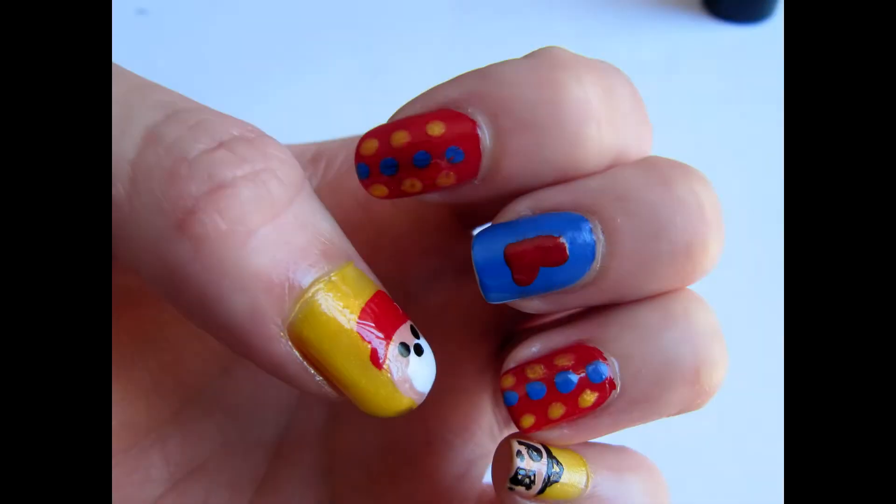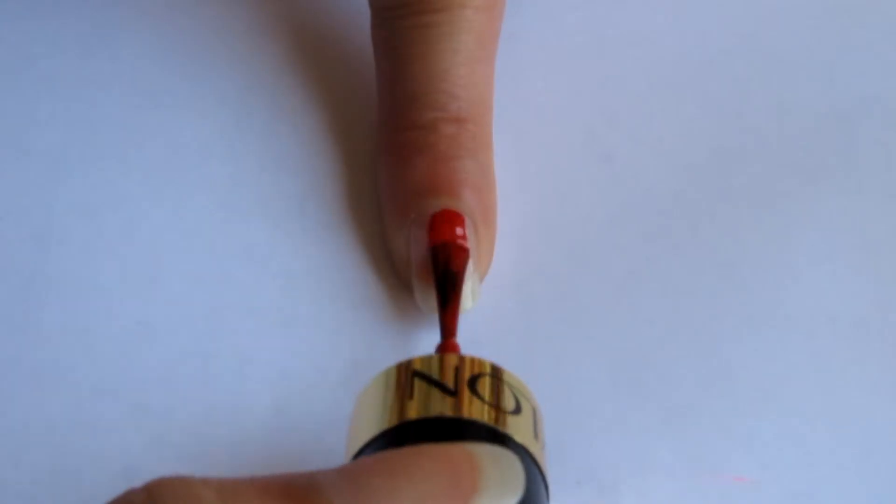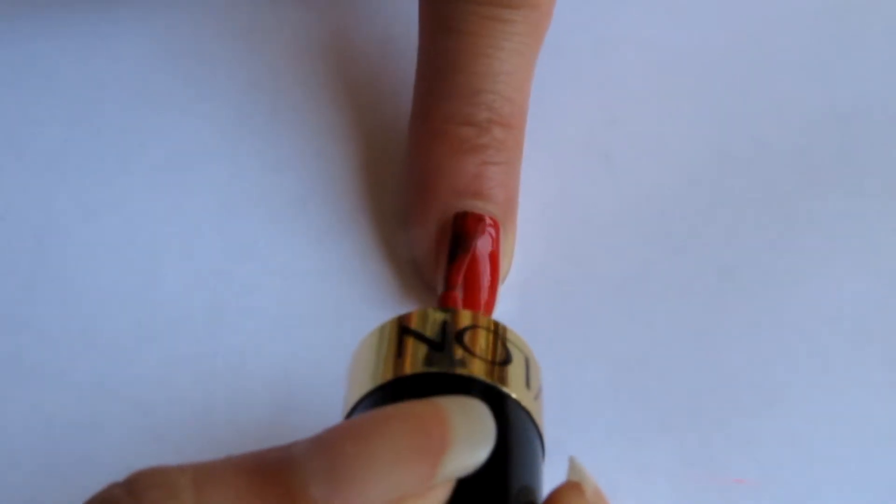For the second design I'm using the same polka dot pattern on both the pointer and ring fingers. After applying the base coat, use the same red polish from earlier to form the background.